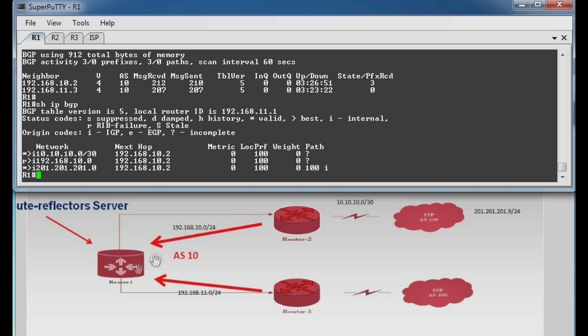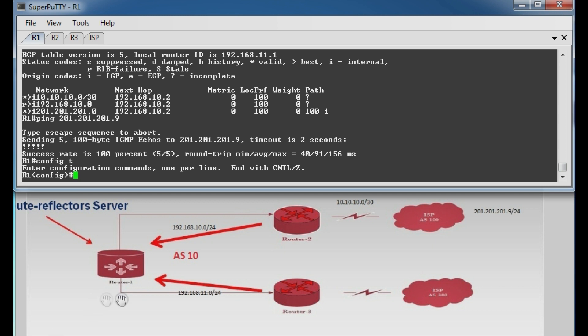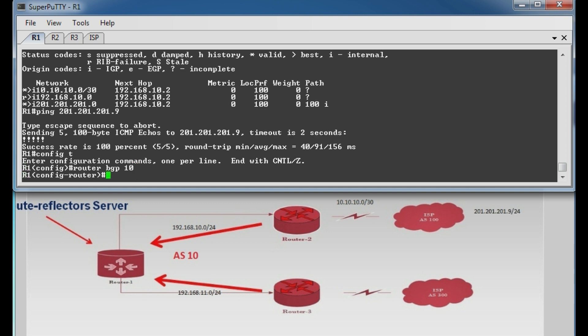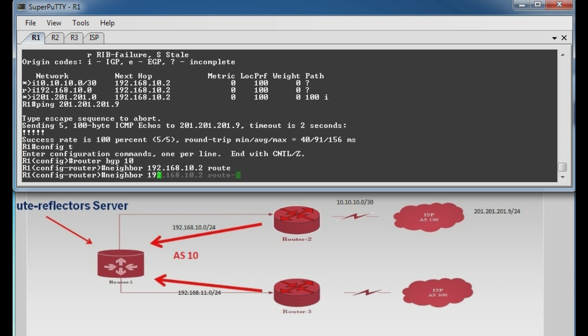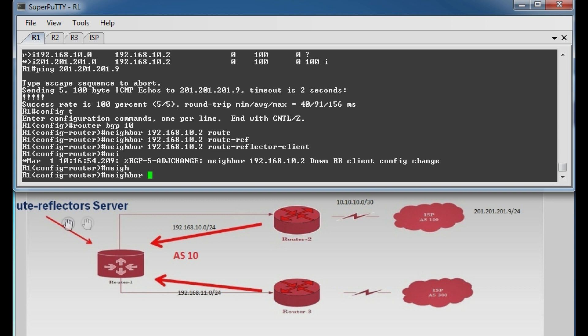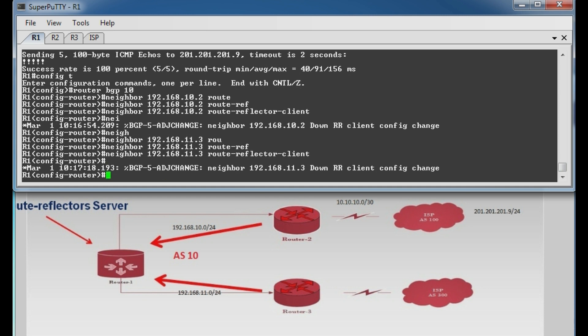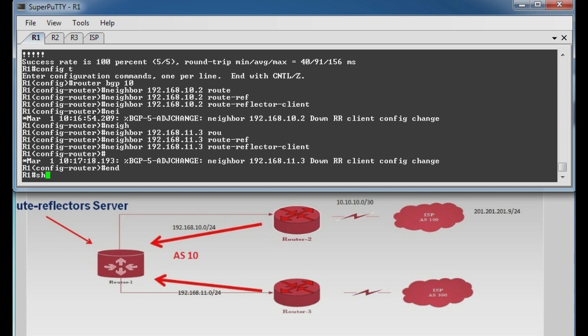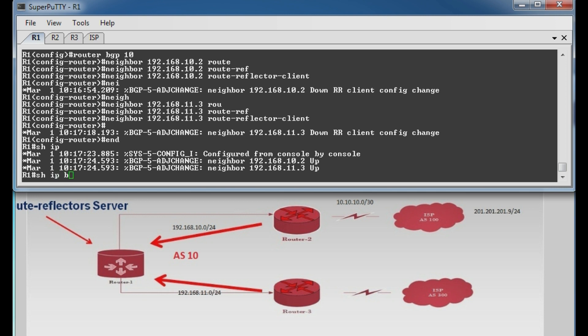Here is the small configuration. We do router 1, config t then press enter, then under BGP process router BGP 10. And here we have to give the command: neighbor 192.168.10.2 route-reflector-client. Then enter. Then we have to again give the command for router 3: neighbor 192.168.11.3 route-reflector-client. That's it. With the help of these commands we establish router 1 as a server and router 2 and 3 as route reflector clients.